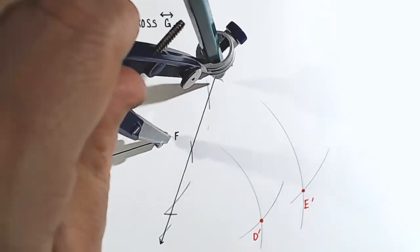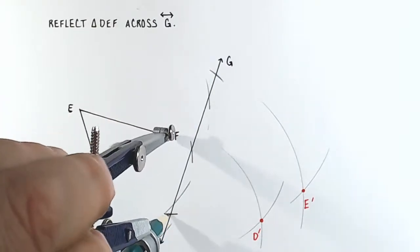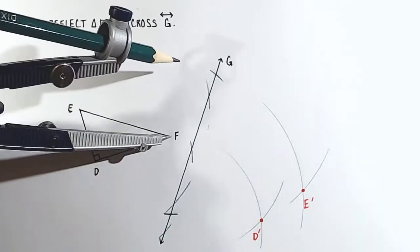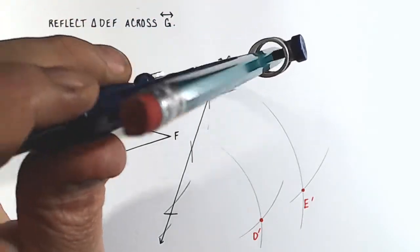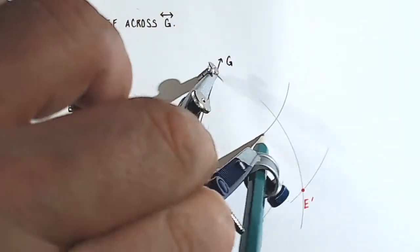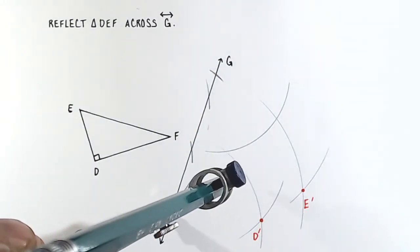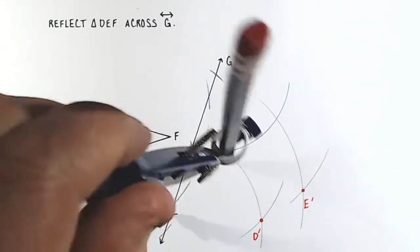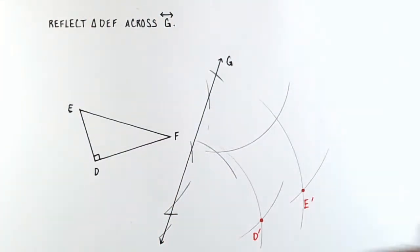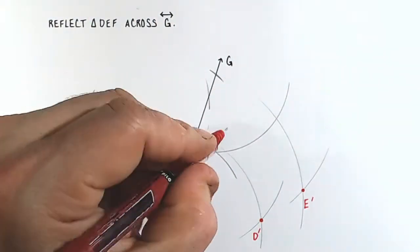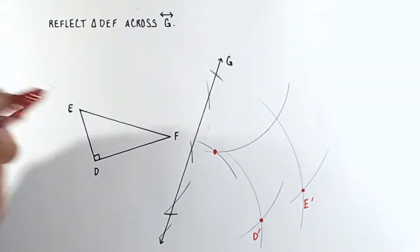You get a lot of lines going on this line of reflection. It's hard to remember which ones you're working with, so keep an eye out. Or you can erase your previous ones. Now we'll do the same thing we did before. We'll draw a big arc until we see these arcs intersect. And they intersect right here. This is point F prime.